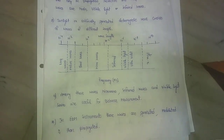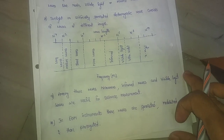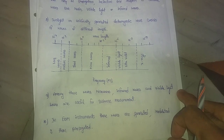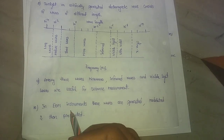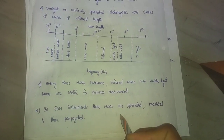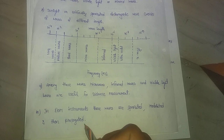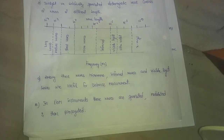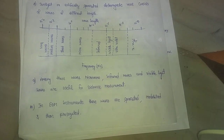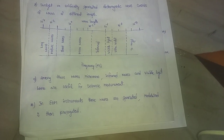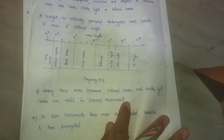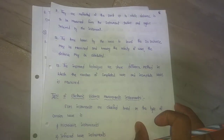For electronic distance measurement, the wavelengths used are microwaves, infrared waves and visible light waves. In EDM instruments, these waves are artificially generated, modulated and then propagated. Propagation means extension. These wavelengths are very helpful for distance measurement.